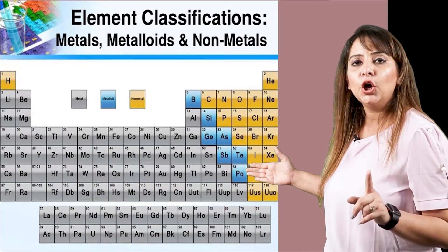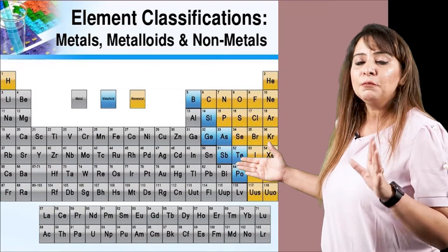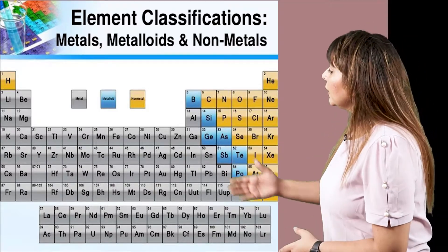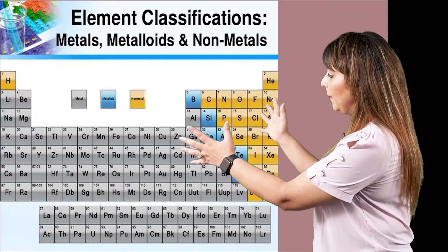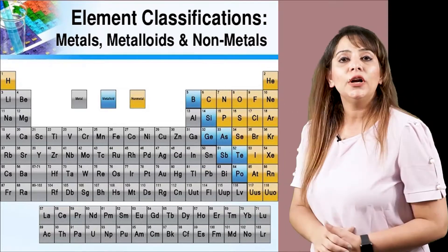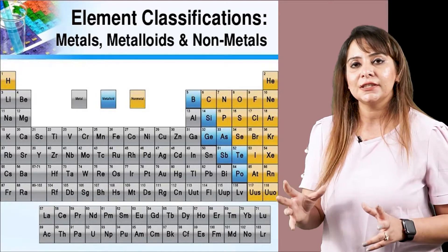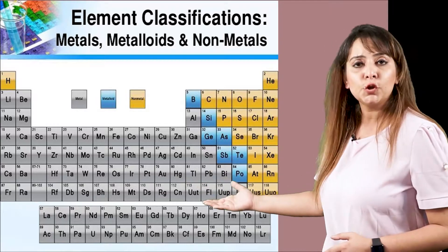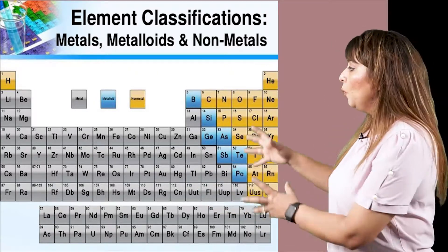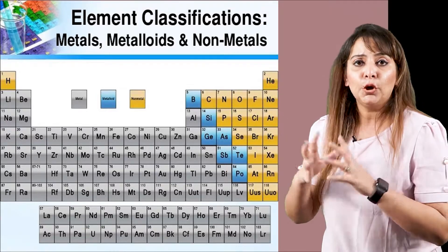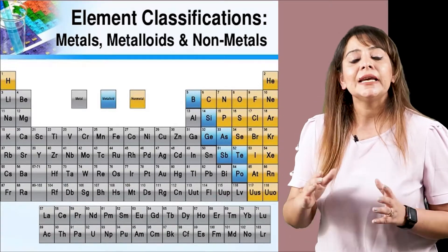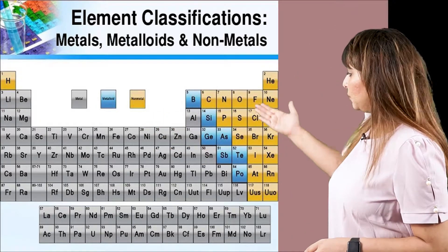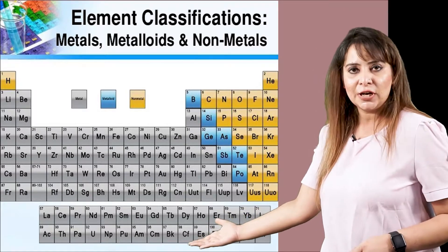Metalloids are elements which resemble both metals and non-metals in their properties. In the middle of the periodic table there are metals called transition metals. On the lower side there are two horizontal rows not accommodated in the main body of the periodic table — those elements are called inner transition metals. So we have metals, non-metals, metalloids, transition metals, and inner transition metals.